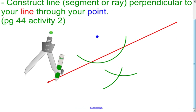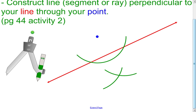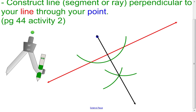What you've done now is you've created another point. You have the original point and the intersection point — connect those with a line. I'm going to use the line, and there you go. I have constructed a line perpendicular to my red line through my original blue point. It should look perpendicular on your paper.